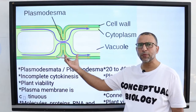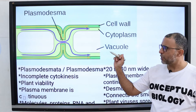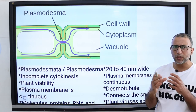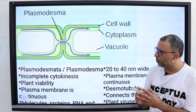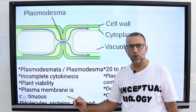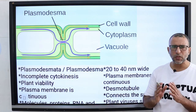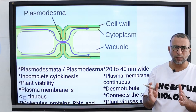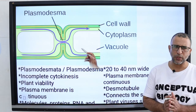How are Plasmodesmata produced in plants? Plasmodesmata are connections produced by incomplete cytokinesis. Cytokinesis is the division of the cytoplasm that takes place during cell division.